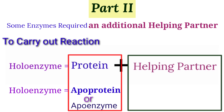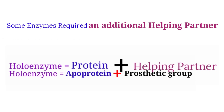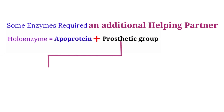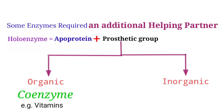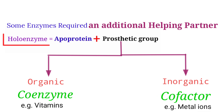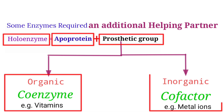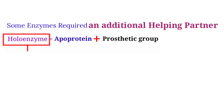The helping partner is known as the prosthetic group. When the prosthetic group is organic in nature, it is known as a coenzyme, and many times vitamins act as coenzymes. When the prosthetic group is inorganic in nature, for example metal ions, it is known as a cofactor. So the holoenzyme equals apoenzyme plus prosthetic group, which may be organic or inorganic.